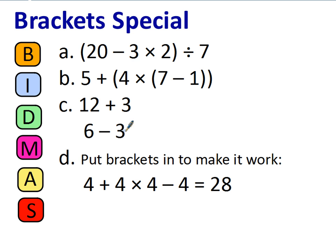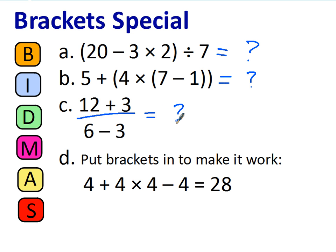I'm going to leave you with these four questions. In part A, work out: bracket 20 take away 3 times 2 close bracket divided by 7. In part B: 5 plus open bracket 4 times open bracket 7 take away 1 close bracket close bracket. In part C: 12 plus 3 over 6 take away 3. And in part D: put brackets in to make 4 plus 4 times 4 take away 4 equal 28. See if you can work those out — you'll need a pencil and paper. Thanks very much for watching.